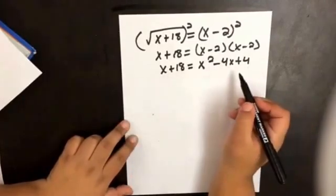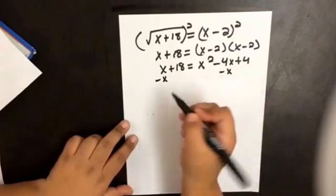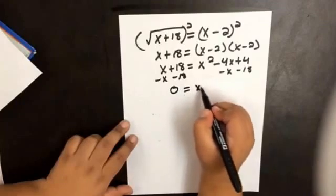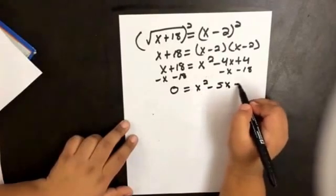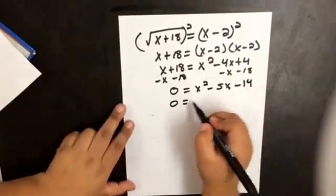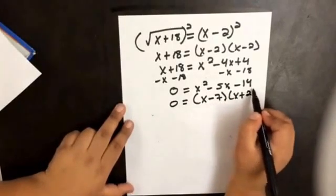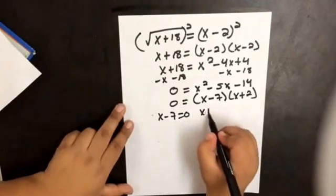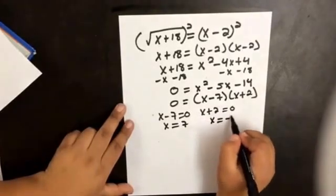If I move my x's to this side and move my 18, then we get x squared minus 5x minus 14 equals 0. We can factor this, so it's going to be x minus 7 times x plus 2 equals 0. So x equals 7 and x equals negative 2.